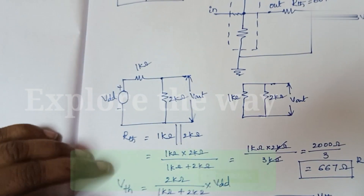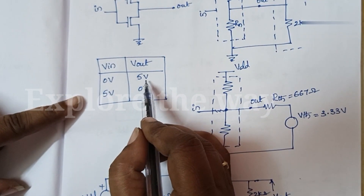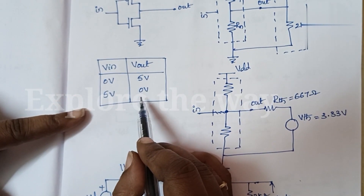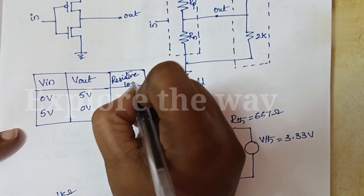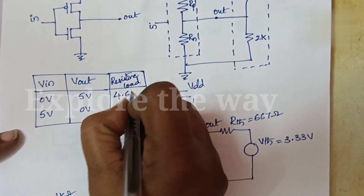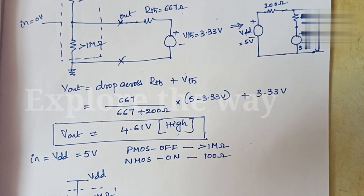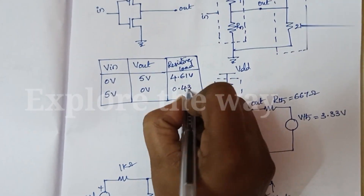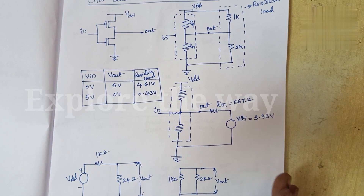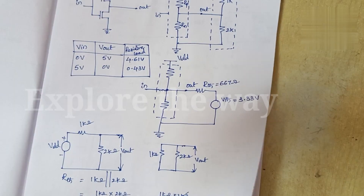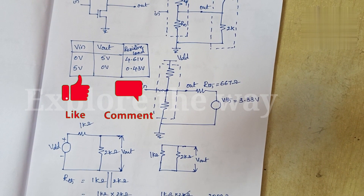So from this analysis: in the ideal case, output in the high state is 5 volts and output in the low state is 0 volts. With the resistive load, in the high state the output voltage is 4.61 volts, and in the low state its value is 0.43 volts. These are not ideal values but are close to the supply rails. This is the behavior of the CMOS circuit with resistive load. If you understood this topic, please like, share, comment, and subscribe for remaining topics like this.